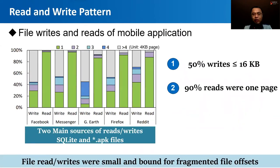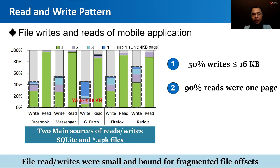I/O patterns of mobile apps can greatly affect compression efficiency. We examined the read and write patterns of SQLite and APK files, which are the two major contributors of I/O traffic for Android. The file reads and writes were quite small, and most of these small I/O requests had random file offsets. For example, about one half of write operations to SQLite were not larger than 16 kilobytes. However, these small file reads and writes impose a penalty on the compression process.